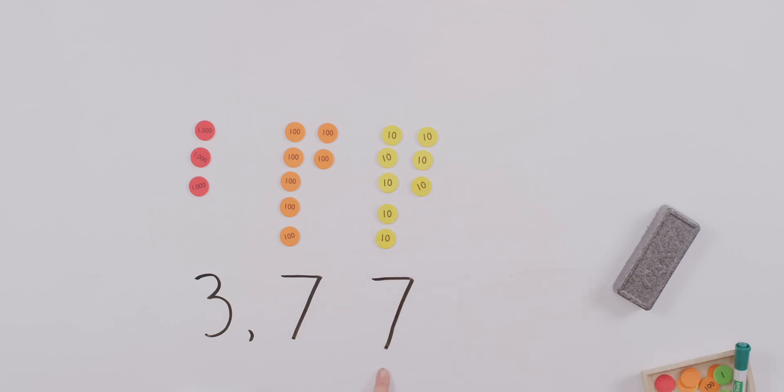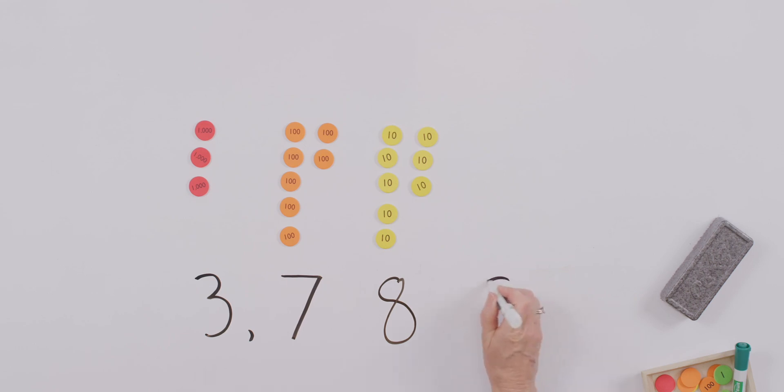If I put one more one, they cannot live there all together, but it's so much fun because we get to trade them. Now, have I written my number correctly or would you like to make a correction? That's right, I have to show that I have zero ones, but not for long.